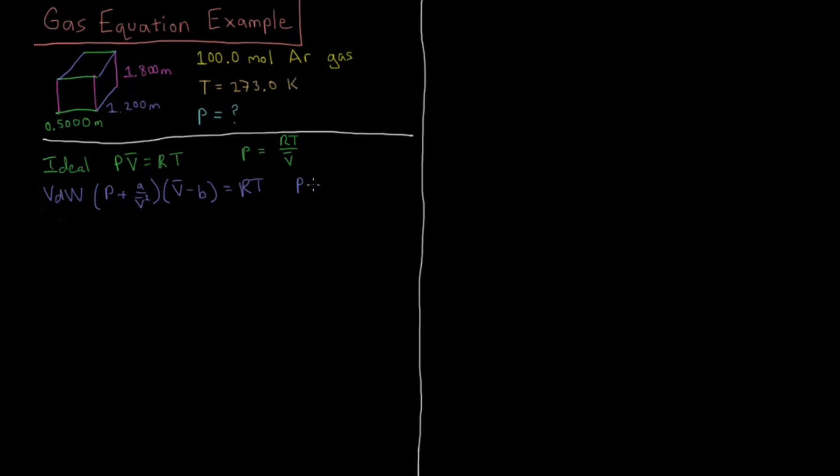If we rearrange this equation for pressure, we get P = RT/(V̄ - B) minus A/V̄². So we want to solve these two equations for the pressure.